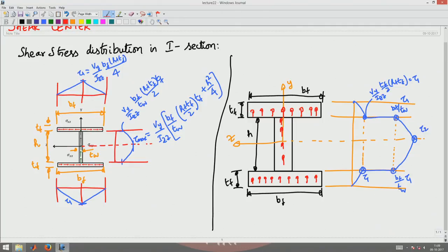When flange width is small compared to the web thickness, we saw that in both cases, the shear stress values will be different depending upon how the stresses are distributed.